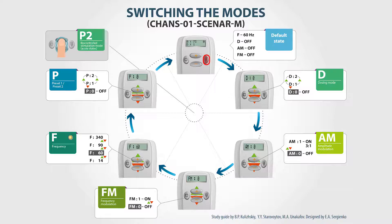By pressing the arrow button once, we select the dosing modes, and then we have 2 seconds to switch it on or switch between them by pressing the plus button, or switch it off by pressing the minus button. If the display says D0, that means that the dosing mode is off. If it says D1 or D2, that means that the dose1 or dose2 mode is on.